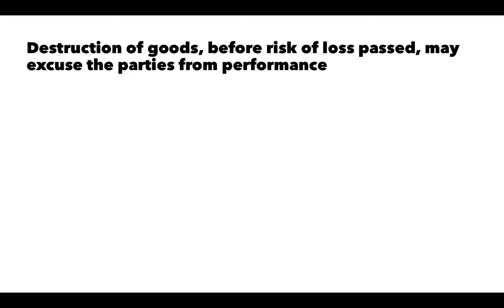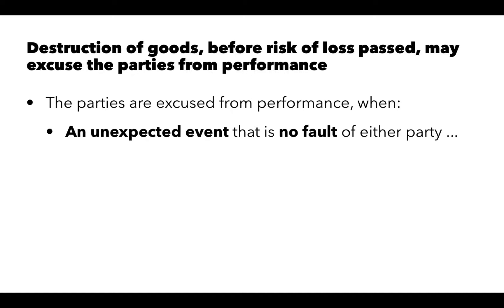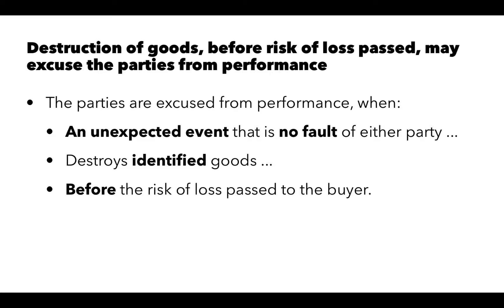Finally, destruction of the goods before the risk of loss has passed may excuse the parties from performance. If the goods are destroyed prior to the passage of risk of loss, the seller may be excused from delivering the goods and the buyer excused from paying for them. The destruction must be an unexpected event that did not happen through the fault of either party — such as a warehouse destroyed by a lightning-caused fire — must destroy identified goods specifically set out in the contract, and must occur before the risk of loss passed to the buyer.